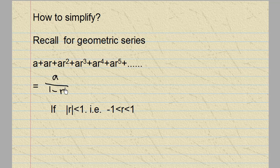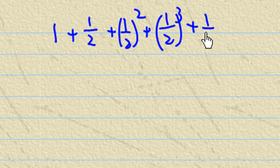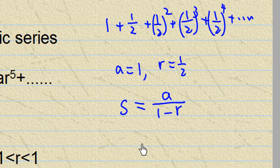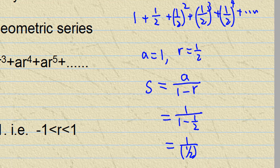For example, if you are asked 1 + 1/2 + (1/2)² and the pattern goes on, what is the sum? In this case, a, the first term, is 1, and the common ratio r is 1/2. So the sum is a/(1-r) where a is 1, r is 1/2, and so you get 1/(1/2) which is 2.